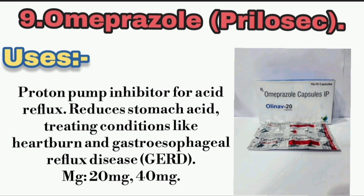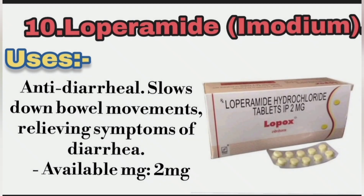9. Omeprazole (Prilosec) — Use: Proton pump inhibitor for acid reflux. Reduces stomach acid, treating conditions like heartburn and gastroesophageal reflux disease (GERD). Available mg: 20 mg, 40 mg.